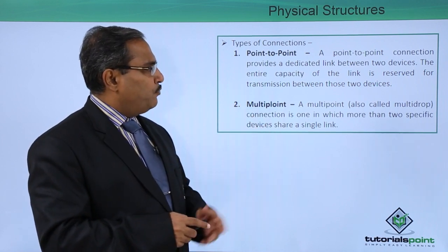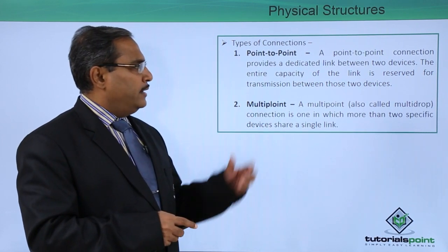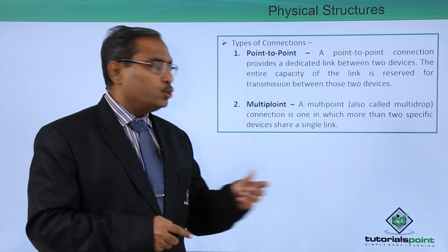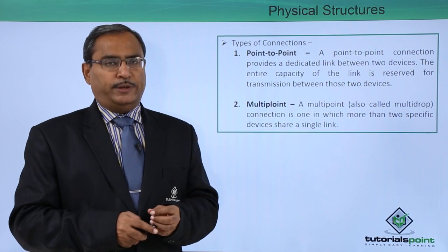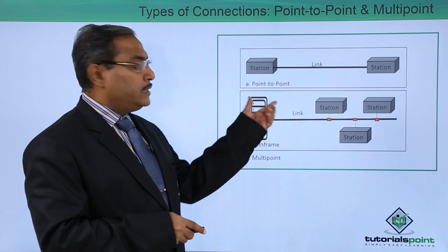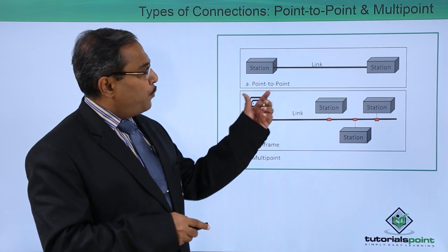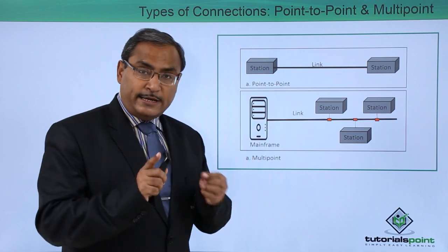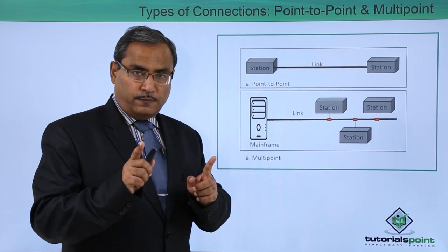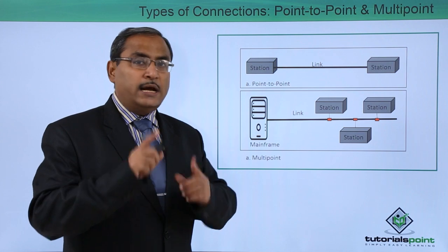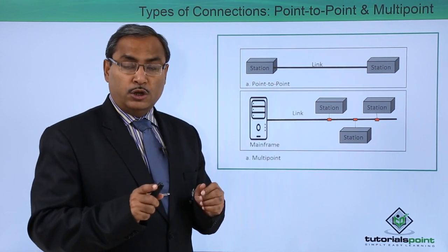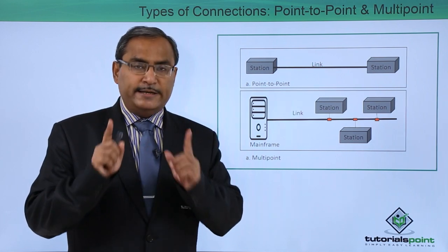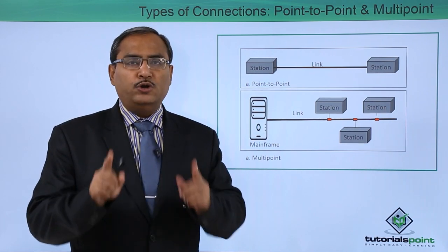A point-to-point connection provides a dedicated link between two devices — the entire capacity of the link is reserved for transmission between those two devices only. In point-to-point transmission, we have station 1 and station 2 with one dedicated link which is not shared for transmission with any other nodes. These two nodes can use that network or media dedicatedly.